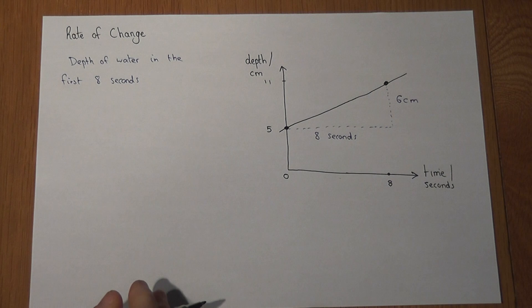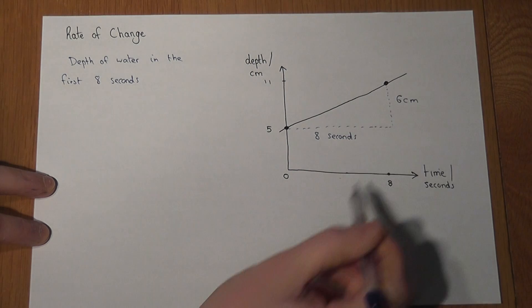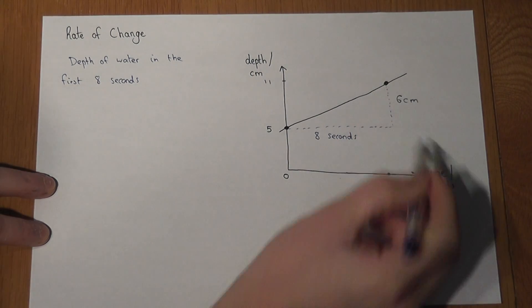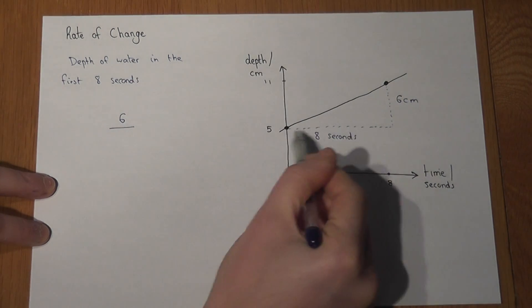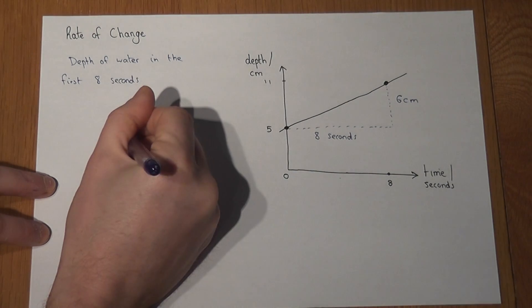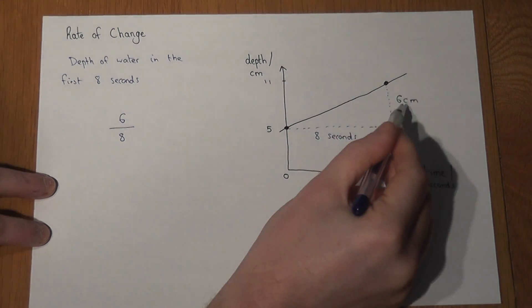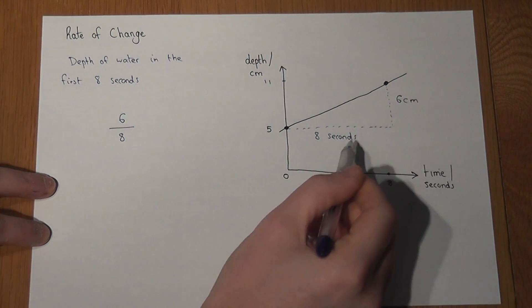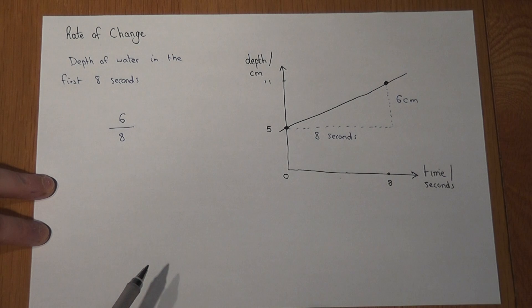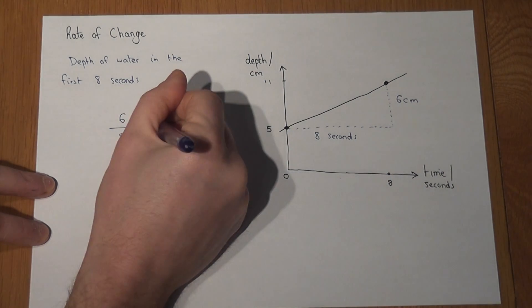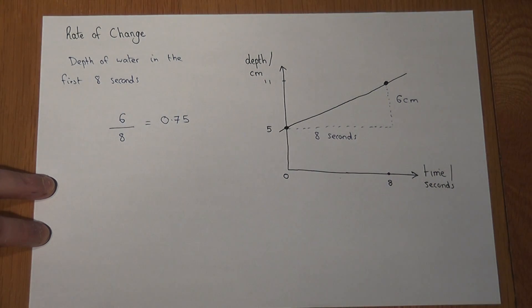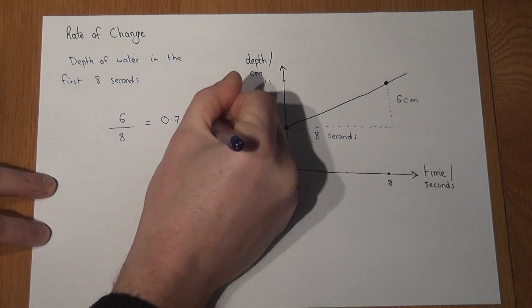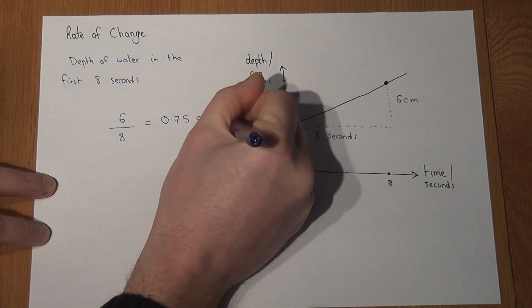To find the rate of change of the depth of water, we work out the change in the depth which can be called the rise, which is 6, divided by the time taken, which is 8. It can be called rise over tread or rise over the run. That's called the gradient which works out to be 0.75 or 3 quarters, and the units are centimeters per second.